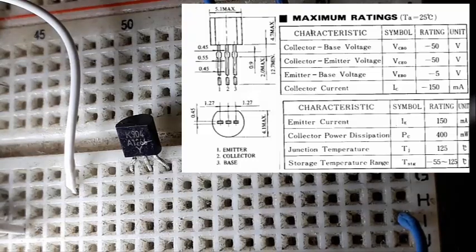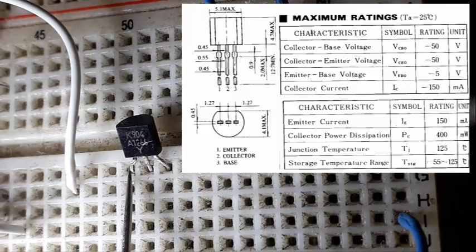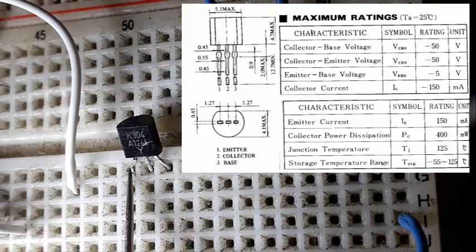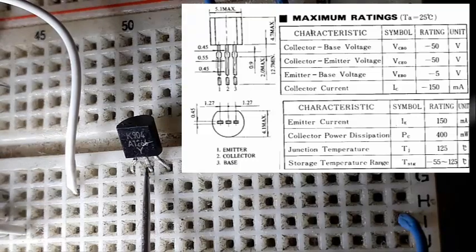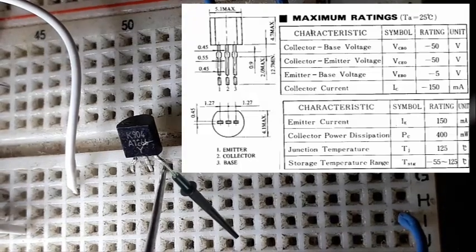Aqui nós temos pino 1, pino 2 e pino 3. O pino 1 seria o emissor, pino 2 o coletor, o pino 3 é a base. Então vamos colocar a ponta preta na base.